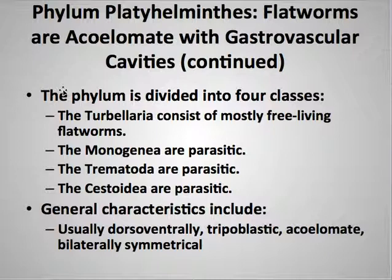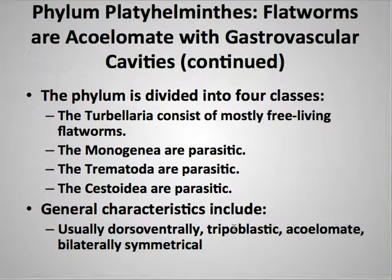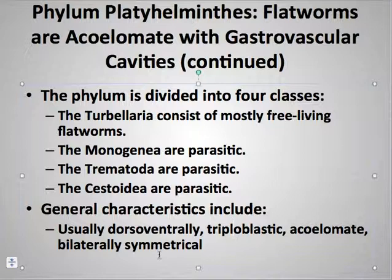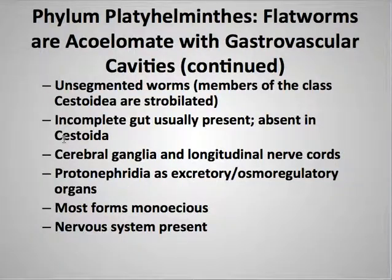The other classes are the monogeneans, the trematodes, and the cestodes. These are going to be parasitic, and that changes their body composition as well as their habits. General characteristics of the phylum include being dorsoventrally compressed, triploblastic, acoelomate, and bilaterally symmetrical. Most of the parasites don't need to have gastrovascular activities — digestion is actually done by their host, so it's not necessary for them to digest anything.